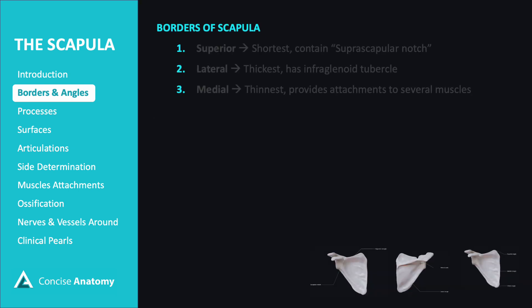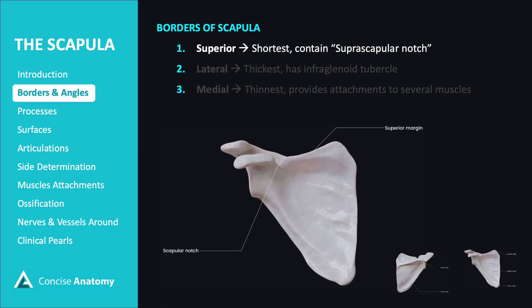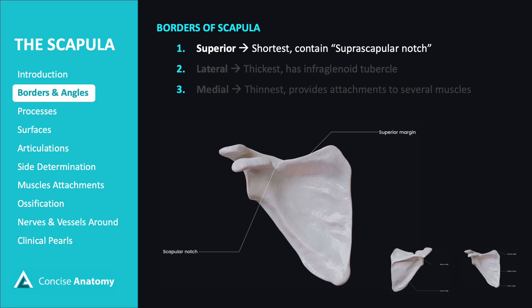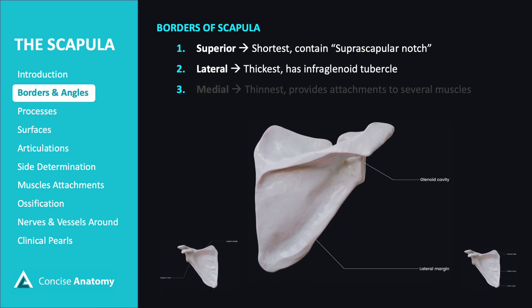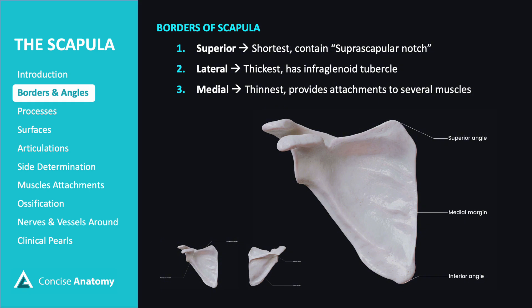The superior border is the shortest of the three. It contains an important feature known as the suprascapular notch, through which the suprascapular nerve passes. The lateral border is the thickest of the borders and features the infraglenoid tubercle, a small projection where the long head of the triceps brachii muscle attaches. The medial border is the thinnest and provides attachment sites for several muscles, including the serratus anterior, rhomboids, and levator scapulae, which are essential for the movement and stabilization of the scapula.